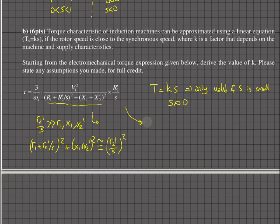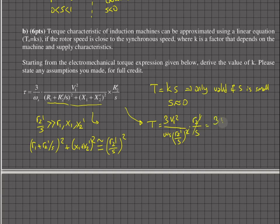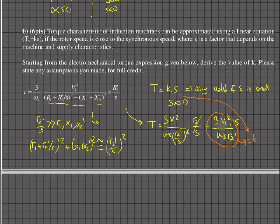Making that substitution, the torque expression simplifies to T = 3V1²s / (ωs × R2'). The (R2'/s)² terms cancel, and we identify K = 3V1² / (ωs × R2'). So torque doubles when slip doubles, as long as the voltage V1 and rotor resistance R2' are not changing. This confirms the linear torque-slip relationship.